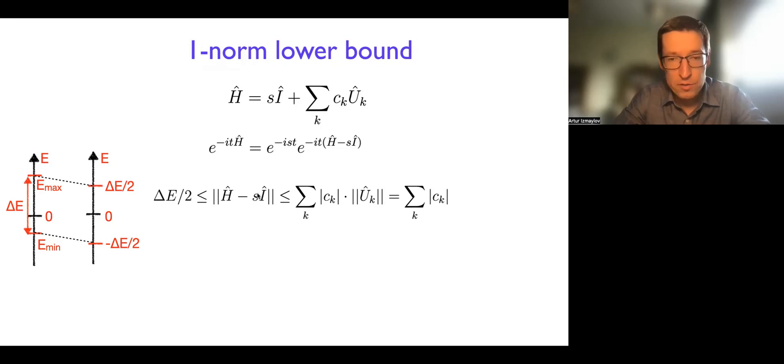Now, you could always shift this S freely to move the spectrum around. And because the spectral norm of H minus S I is always going to be the largest eigenvalue of this shifted Hamiltonian, the lowest value that you can get for this largest eigenvalue is the delta E divided by two, because to make this spectral norm the smallest, you would want to shift the spectrum symmetrically around the zero, right? And so this delta E divided by two is half of the spectral range.